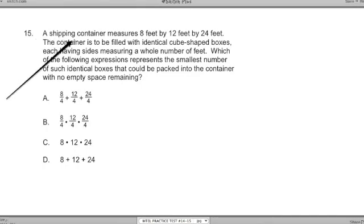Number 15. A shipping container measures 8 feet by 12 feet by 24 feet. The container is to be filled with identical cube shaped boxes, each having size measuring a whole number of feet. Which of the following expression represents the smallest number of such identical boxes that could be packed into the container with no empty spaces remaining? I like this problem a lot. One, because there's got a lot of clues here that are going to help us think about the problem.